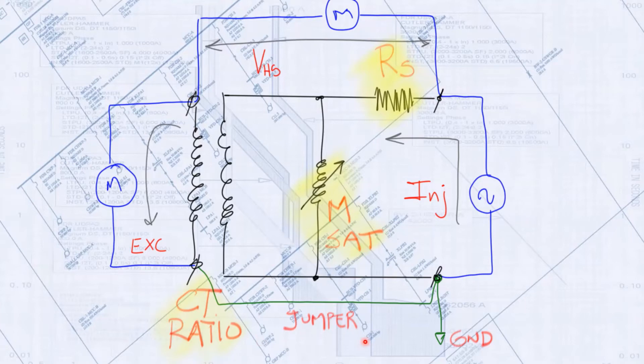In field testing applications where a ground grid is available, a grounding jumper is connected between the H2 and X2 terminals for safety and insulation testing reference. With this arrangement, testing readings are recorded for estimation of ratio, saturation, and secondary winding impedance.